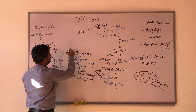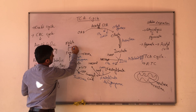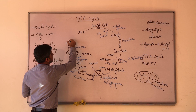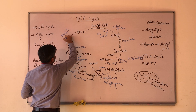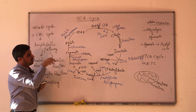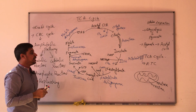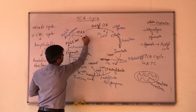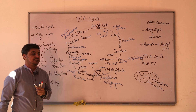From fumarate, we will have malate, and the enzyme involved is fumarase. Then, with the help of malate dehydrogenase, malate is converted back into oxaloacetic acid. Again, as I told you, whenever there is involvement of dehydrogenase enzyme there will be the formation of NADH + H+. And now oxaloacetic acid is ready to start a new Krebs cycle.